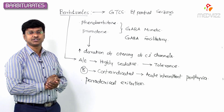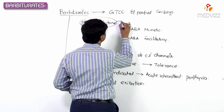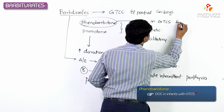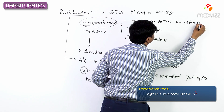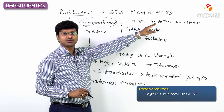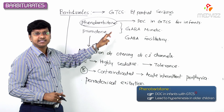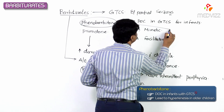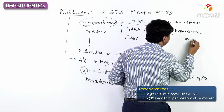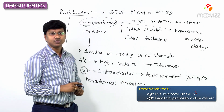An important MCQ point about phenobarbitone: phenobarbitone is considered the drug of choice in generalized tonic-clonic seizures for infants. However, the same phenobarbitone will cause hyperkinesia in older children.